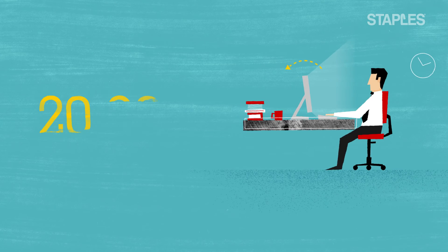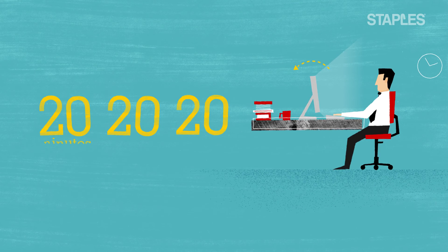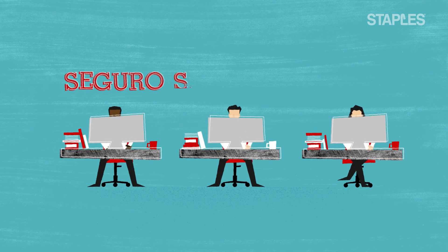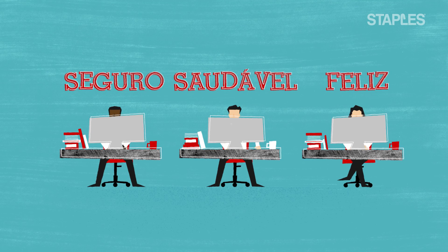And remember to follow the 20-20-20 rule. Every 20 minutes you should look at something 20 feet away for 20 seconds, giving your eyes a much-needed break. It's simple. A safe and healthy workplace is a happy workplace.